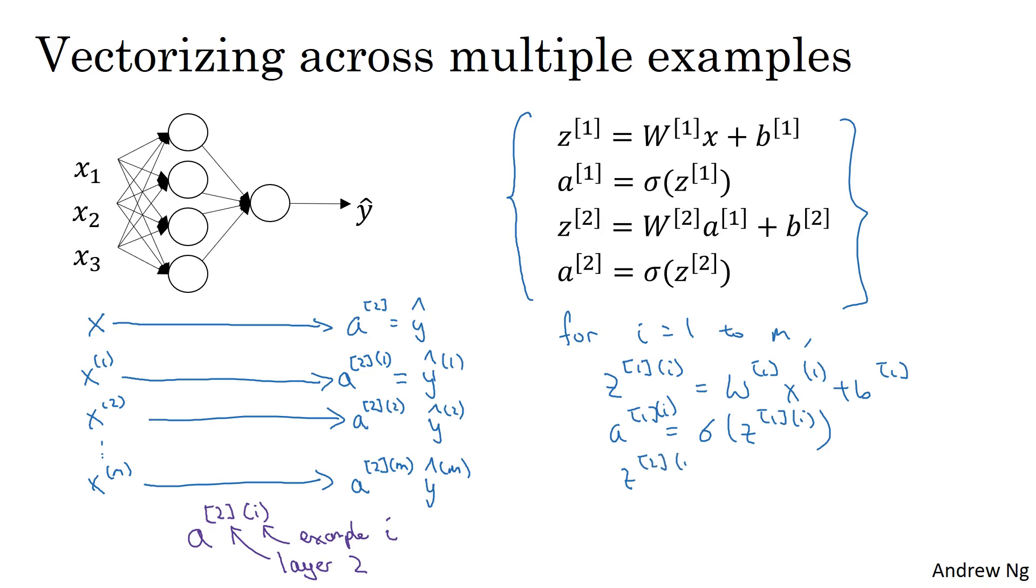z2i equals w2 a1i plus b2, and a2i equals sigmoid of z2i, right?